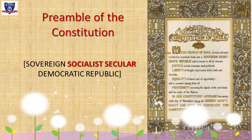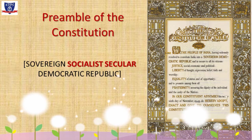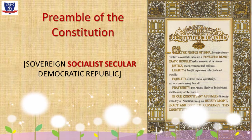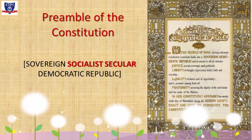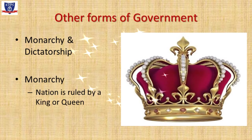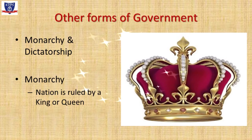What you see in this image is the original preamble framed in 1950. The words 'secular' and 'socialist' were added to the preamble in 1976 during the emergency declared by our then Prime Minister, Indira Gandhi. But before we understand democracy in depth, let us try to understand two other forms of government: monarchy and dictatorship.